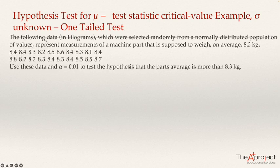The problem says like this. The following data in kilograms, which were selected randomly from a normally distributed population of values, represent measurements of a machine part that is supposed to weigh on average 8.3 kilograms. And here we have all the measurements. Use this data and alpha equals 0.01 to test the hypothesis that the part's average is more than 8.3 kilograms.